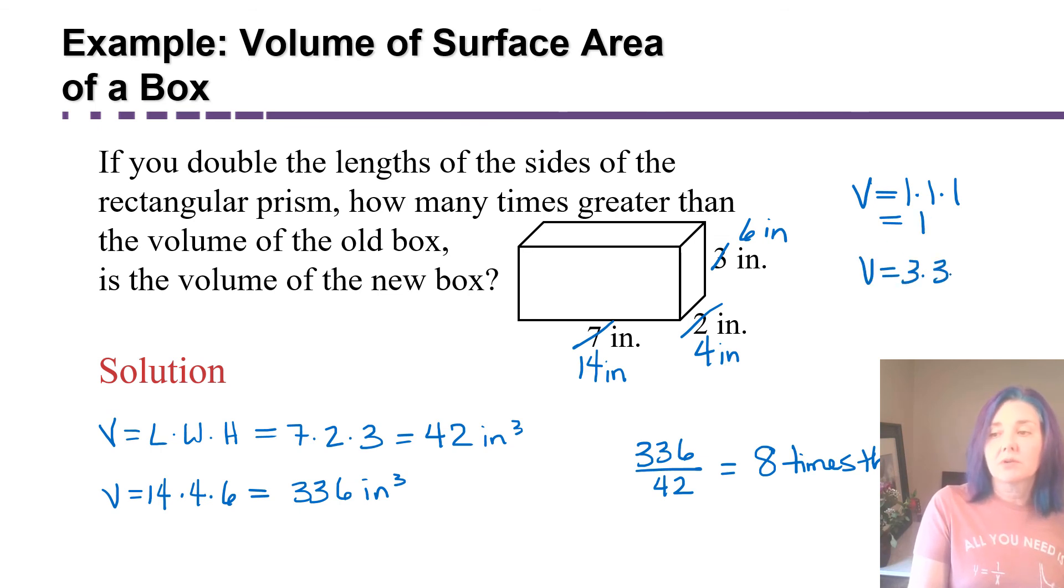If we triple each one of those dimensions, we get three times three times three is 27 times the capacity.